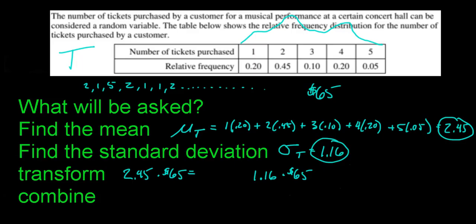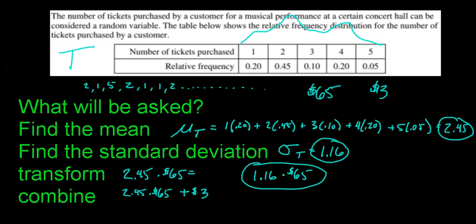Be careful: if the formula involves adding a constant, it only affects the mean. Say tickets cost $65 each but there's a $3 transaction fee regardless of how many tickets you buy. The mean becomes 2.45×65 + 3, but for the standard deviation you don't add that constant — it's still 1.16×65. Adding a constant does not affect how much you deviate.